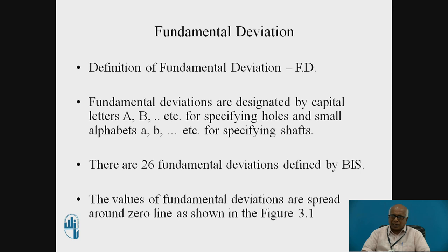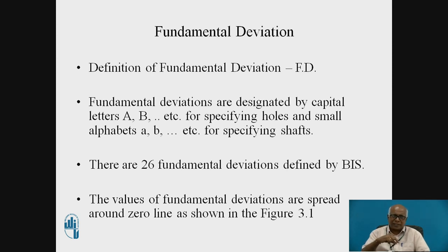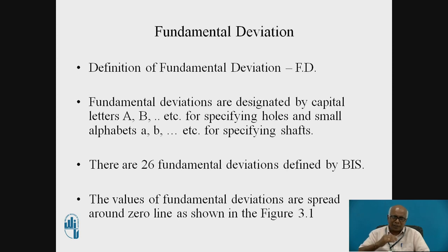Tolerances are normally specified as unilateral tolerances, in which case the tolerance zone is placed either above or below the zero line. In that case, either the lower or upper deviation will be nearer to the basic size. If the tolerance zone is placed above the zero line, then the lower deviation becomes the fundamental deviation; if placed below the zero line, the upper deviation becomes the fundamental deviation.